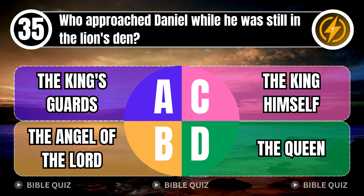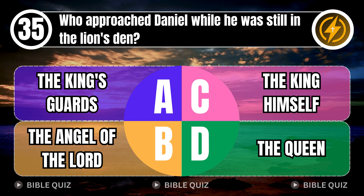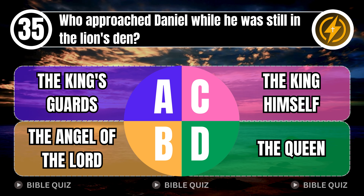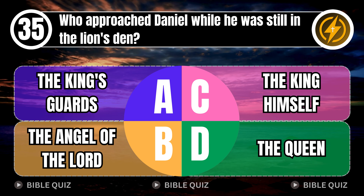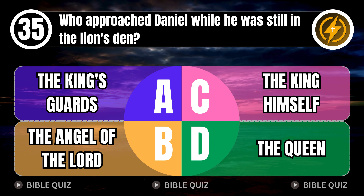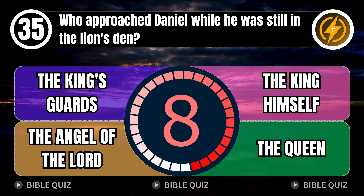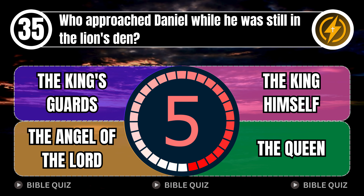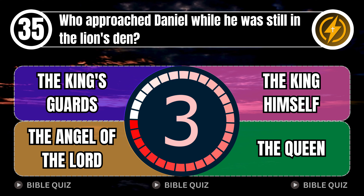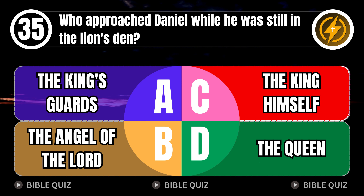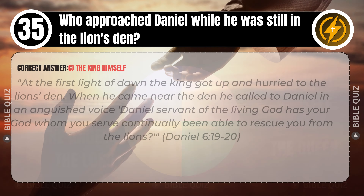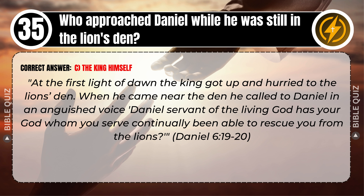Question 35: Who approached Daniel while he was still in the lion's den? A. The king's guards. B. The angel of the Lord. C. The king himself. D. The queen. Correct answer: C. The king himself. At the first light of dawn, the king got up and hurried to the lion's den. When he came near the den, he called to Daniel in an anguished voice, 'Daniel, servant of the living God, has your God, whom you serve continually, been able to rescue you from the lions?' Daniel 6 verses 19–20.